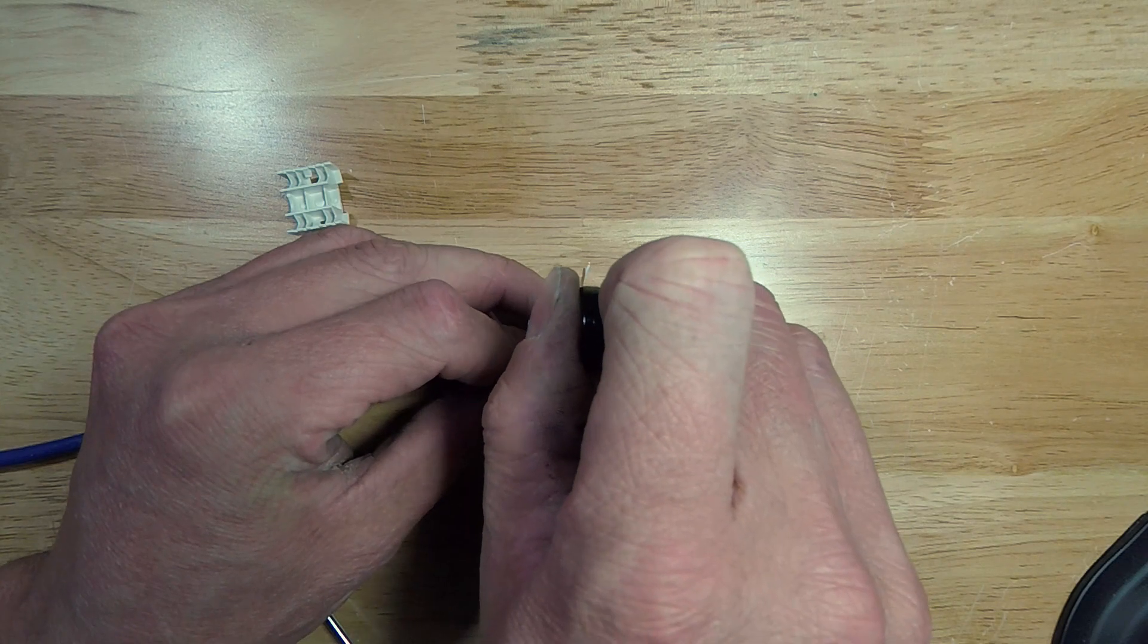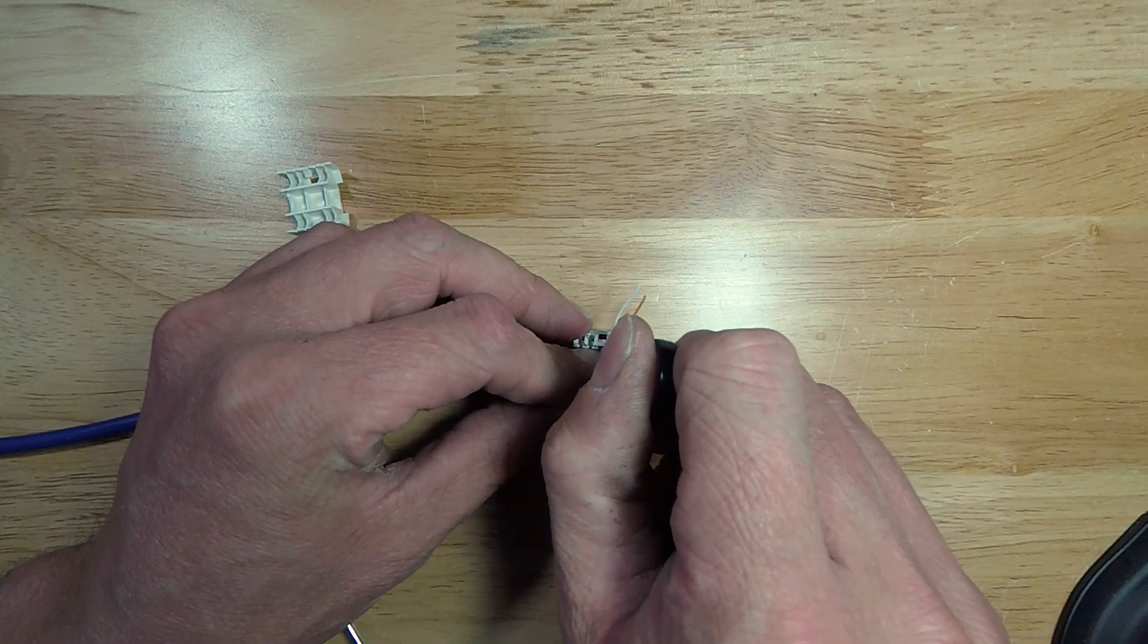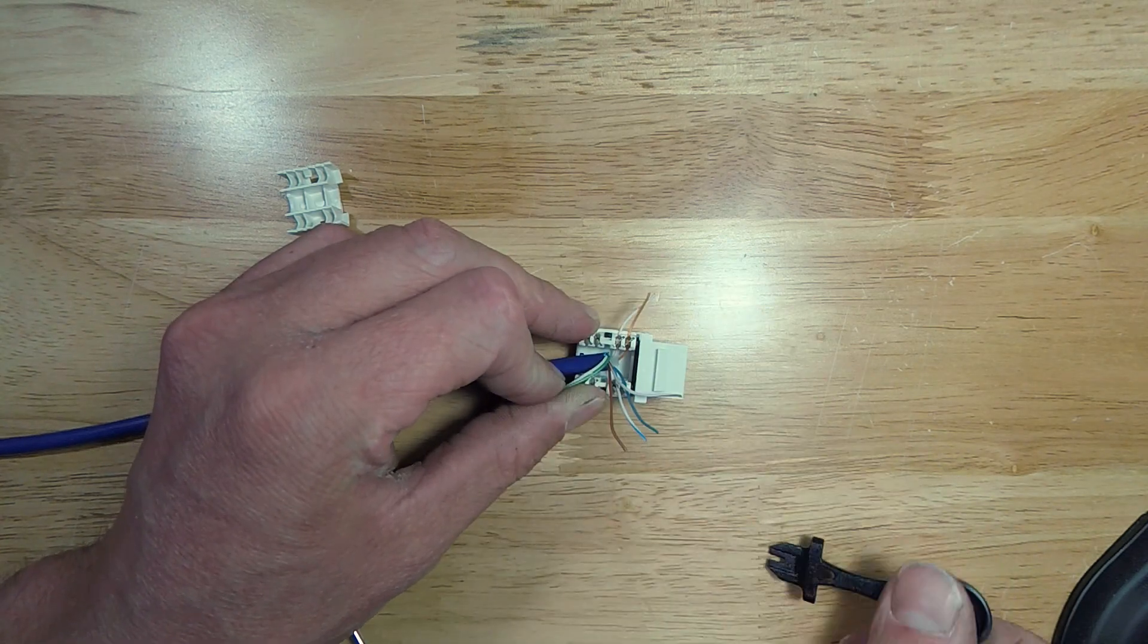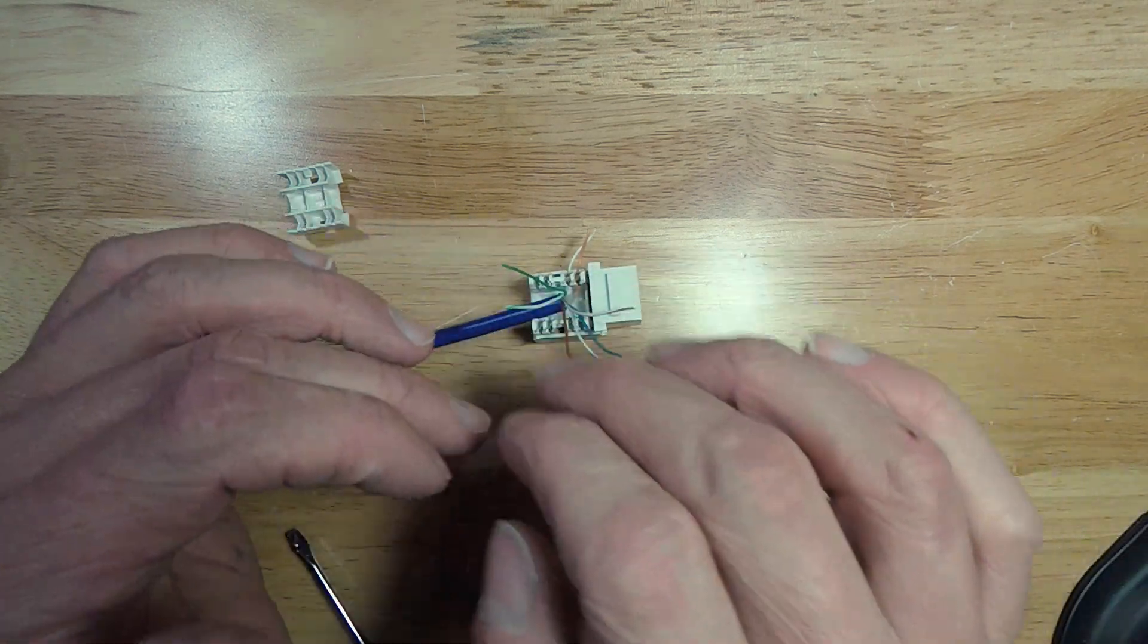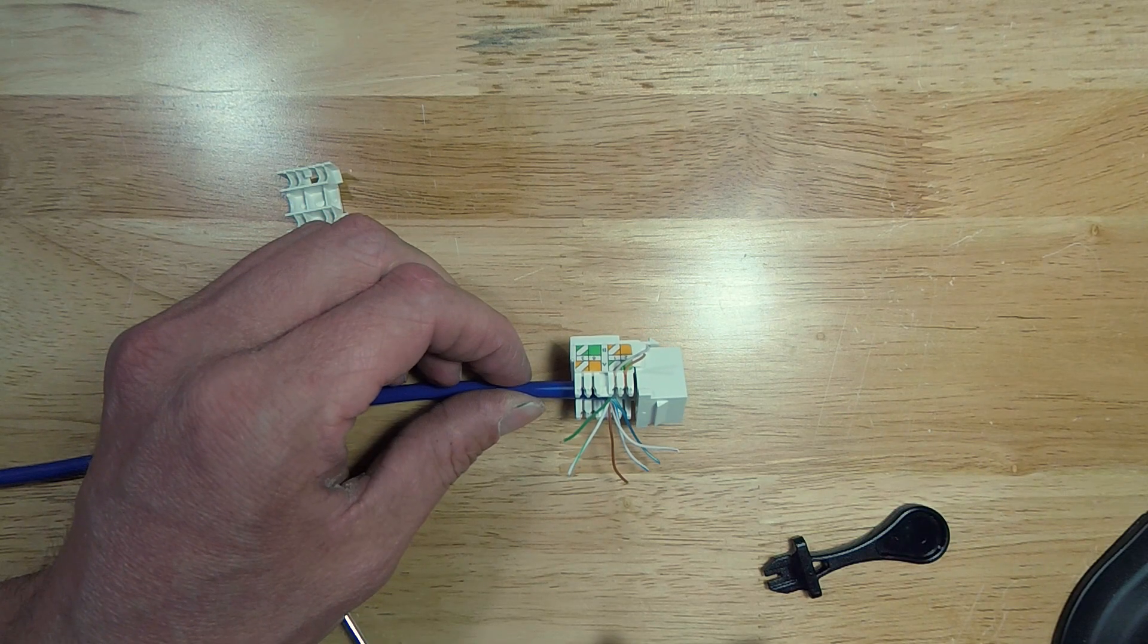I'm going to take my punch down tool. I'm going to punch down my orange all the way to the bottom. You're going to do the same thing with all of your wires, just following the pattern that's already on your jack.